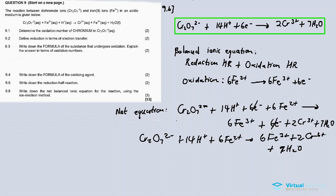To balance redox reactions using the ion-electron method, you need to balance both half reactions in terms of electrons. Sometimes the electrons match directly without needing to multiply; other cases require multiplying one or both half reactions. Thanks for watching — the link for more questions on this paper is in the description below. If you enjoyed the video, leave a like, share, and consider subscribing. Thanks for watching, peace.